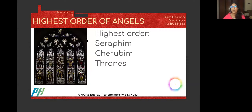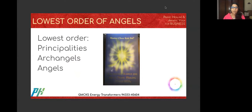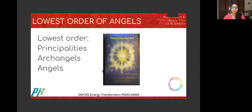So we have the Seraphims, the Cherubims, and the Thrones. After that we have what's called the middle order, also called the middle dominion. The middle dominion of angels are called Dominions, Virtues, and Powers. The third order of angels, also called the lowest order, are Principalities, Archangels, and Holy Angels. This is what we discussed on the first day.